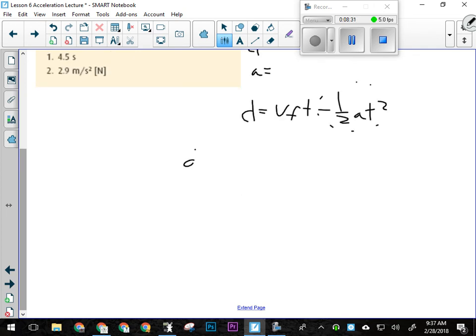That's going to equal negative 1/2 AT squared. Everybody all right with that? I want to get A by itself, so I'm going to divide negative 1/2 T squared over to this side. And that'll leave me with A. So now I start plugging in my numbers.